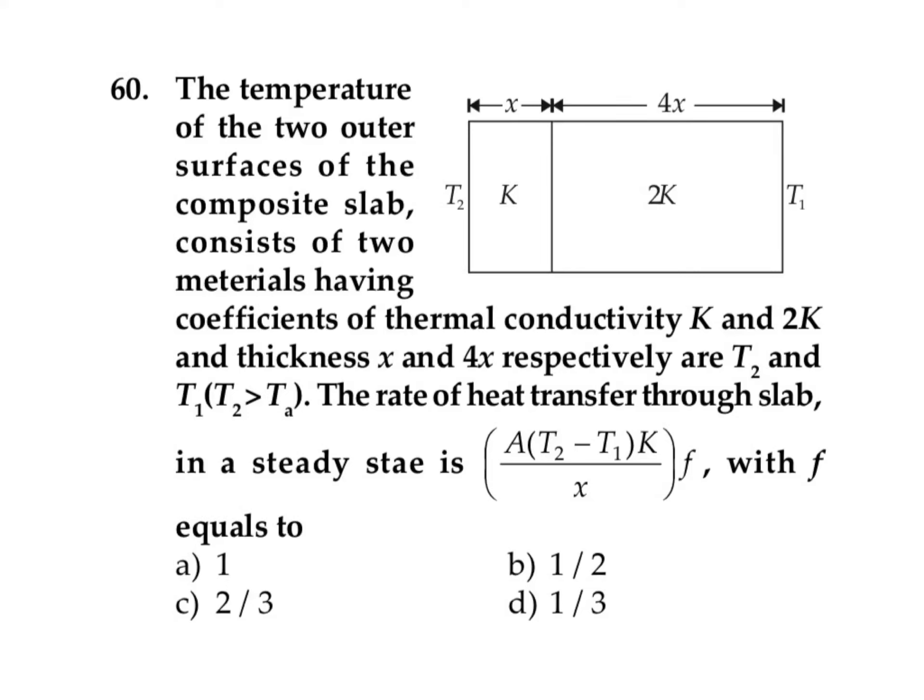In this question, it is given that the temperature of two outer surfaces of a composite slab consists of two materials having coefficients of thermal conductivity K and 2K, and thicknesses x and 4x respectively. The temperatures are T2 and T1, where T2 is greater than T1.